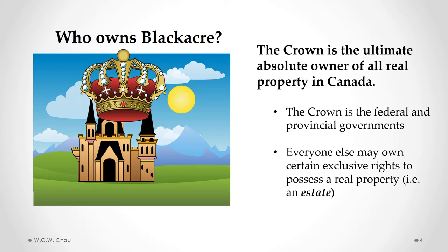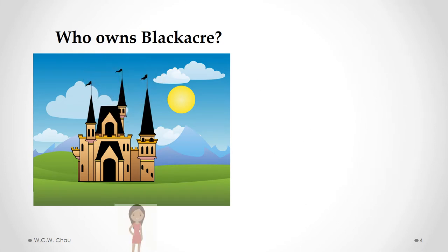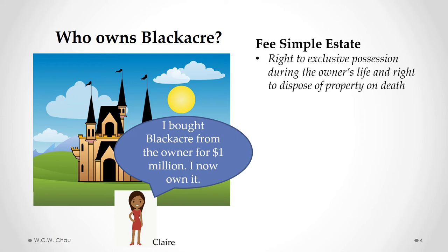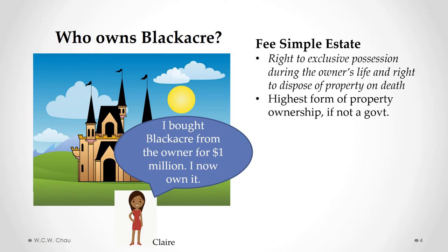If we have Claire here — she has entered into a deal to buy Black Acre from the previous owner. She found the property for sale on a listing site like MLS.ca, made an offer, the offer was accepted. What does she exactly own? She owns what we call a fee simple estate. A fee simple estate is the right to exclusive possession during the owner's life and the right to dispose of the property on death. A fee simple estate is the highest form of property ownership that you can have if you're not a government.